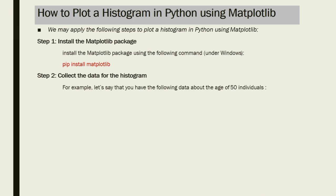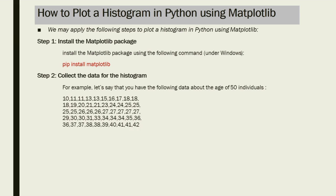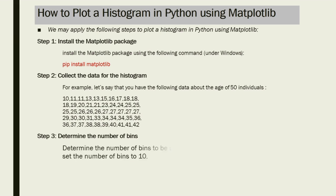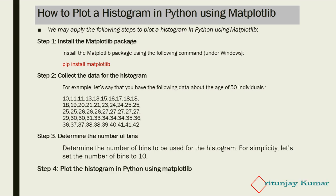Step number two is to collect the data for the histogram. For example, let's say we have the following data about the age of 50 individuals. These are the ages of 50 individuals, and this is the data upon which a histogram will be created. Step number three is to determine the number of bins — for simplicity, let's set the number of bins to 10.